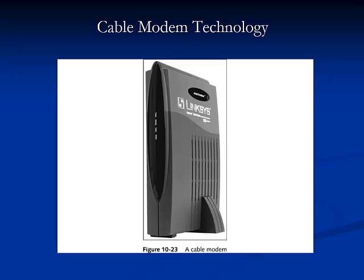Cable technologies use the existing cable TV infrastructure to offer subscribers access to the Internet. To accomplish this, cable companies must upgrade their networks to allow bidirectional signaling. Cable is an asymmetric technology that offers at least as much throughput as T1s for much less money. However, cable is a shared network, meaning that an entire neighborhood may be sharing a fixed amount of bandwidth.